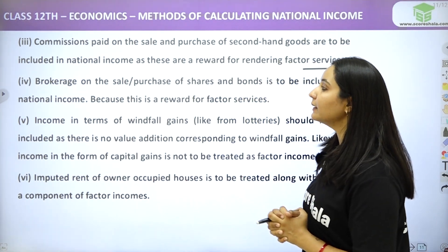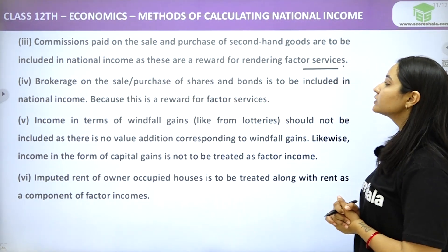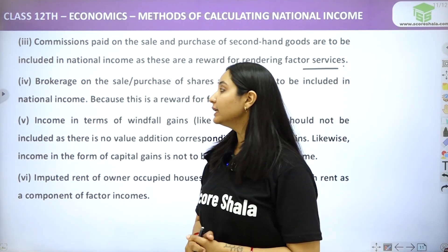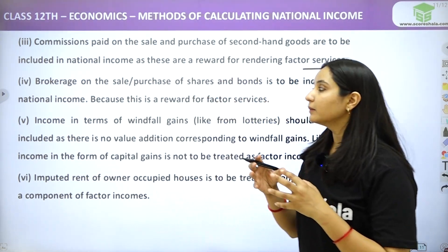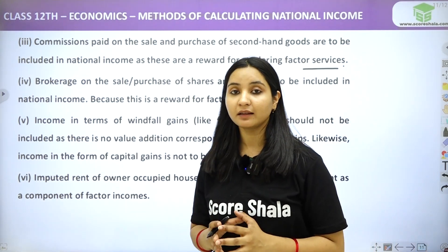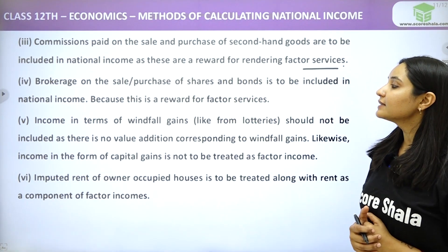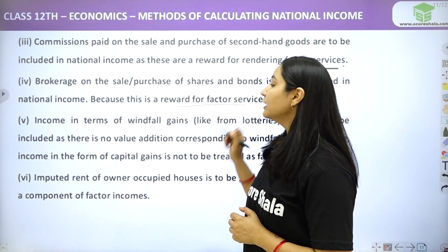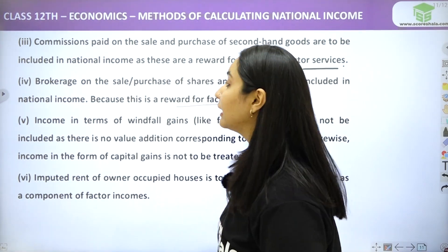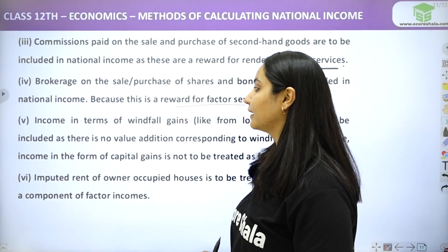The fourth point: brokerage on the sale or purchase of shares and bonds is to be included in national income, because this is a reward for factor services. Factor services rendered earn a reward, and that reward is included in national income.